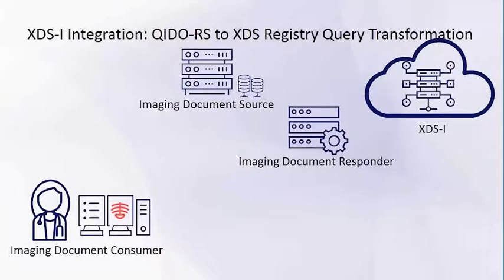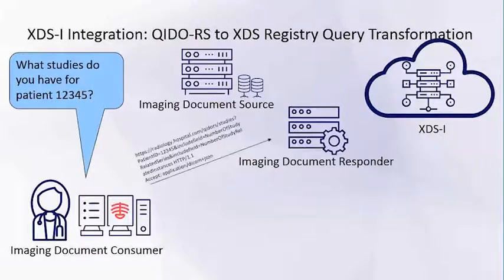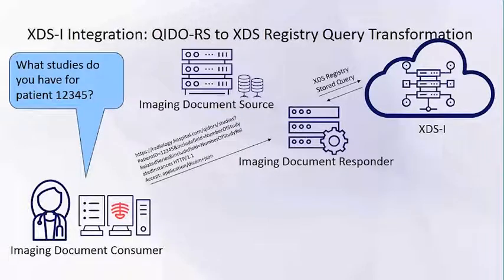With the imaging document consumer, similarly, I want to find what studies are there for patient 12345. Instead of directly querying the XDS document registry, the consumer can send a QIDO-RS query to the imaging document responder, just like what I showed earlier. But in this case, the responder has an integration with the XDSI backend, so the responder will convert that QIDO-RS query into an XDS registry store query and find some metadata. The responder has its own mechanism — whether it's using the query or actually retrieving the object — to find additional information, then gets the metadata and returns it to the consumer.